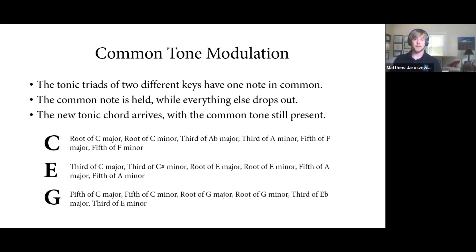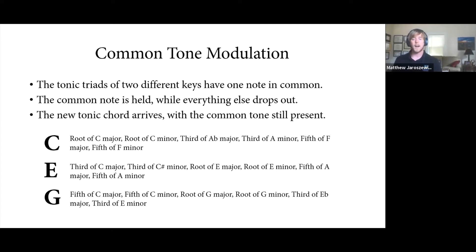Using the note G — the fifth of C major — it's also the fifth of C minor, the root of G major, the root of G minor, the third of E-flat major, and the third of E minor. So from C major using the common tone modulation, you can go to distant places such as A-flat major, A major, E-flat major, and many others.